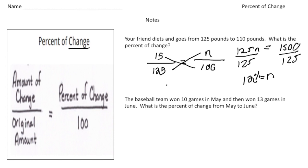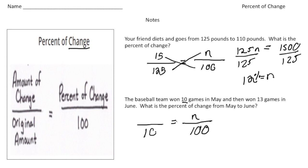Let's do one more. The baseball team won 10 games in May and then won 13 games in June — what is the percent of change from May to June? Obviously the team got better, so the percent of change is going to be positive. Let's set up our proportion: 100 always goes in the bottom right corner, and n is the percent of change above it. The team started by winning 10 games, so 10 is the original amount.